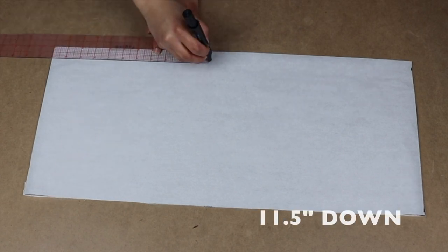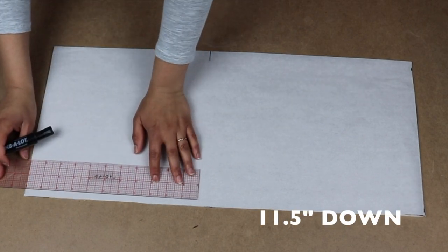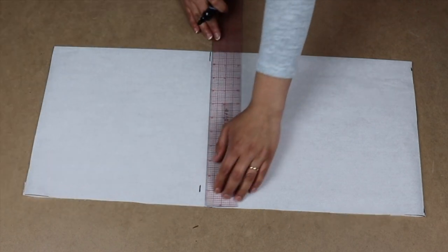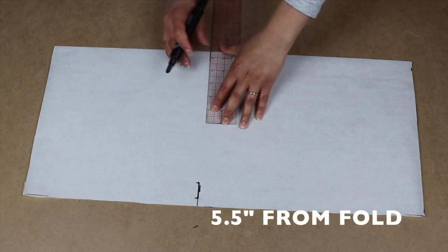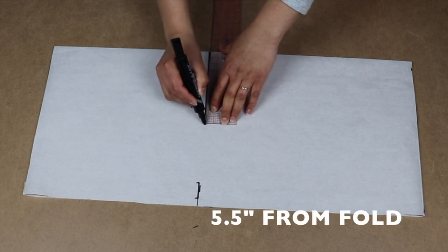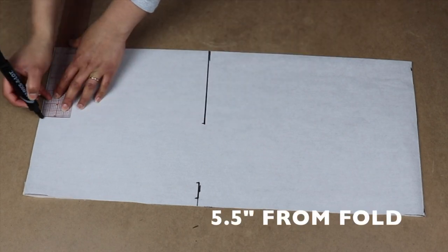From the top, measure down 11.5 inches. At this point measure half inch, then one inch from the open side and 5.5 inches from the fold. Do the same at the top and connect these lines.